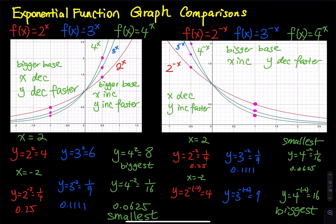Let's do an exponential function graph comparison. I would like to use three functions to explain this: y equals 2 to the x in red, 3 to the x in blue, and 4 to the x in green. I also want to explain what happens when you change x to negative x. Let's explain the positive x first. The color coding is very important: red is 2 to the x, blue is 3 to the x, green is 4 to the x.